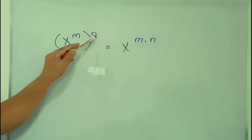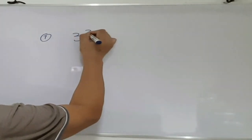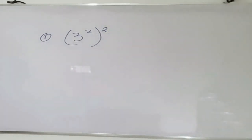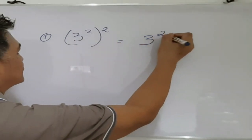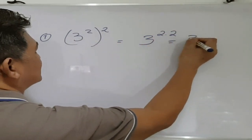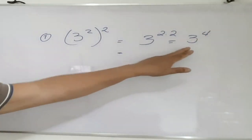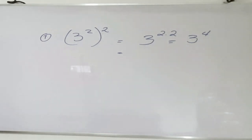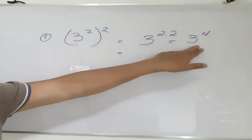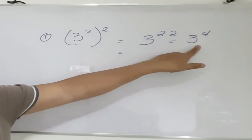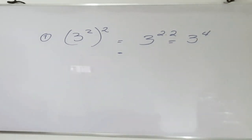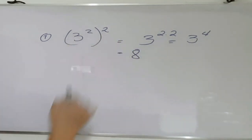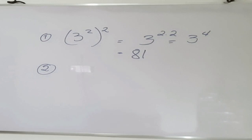Example number 1: 3 squared raised to the second power. The rule says multiply the exponents: 2 times 2, giving 3 raised to the fourth power. In mathematics that is not yet the final answer — you multiply 3 by itself 4 times: 3 times 3 is 9, times 3 is 27, times 3 is 81. So 3 squared raised to the second power equals 81.